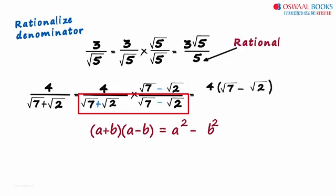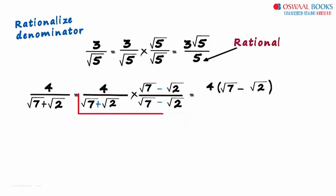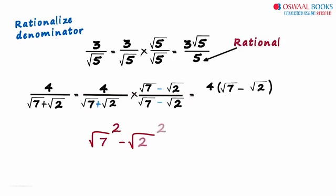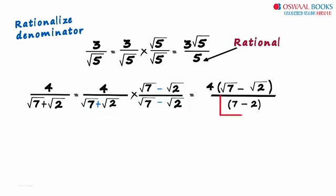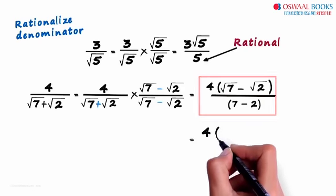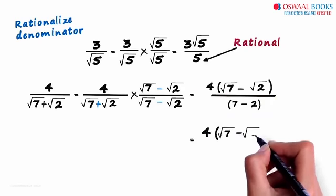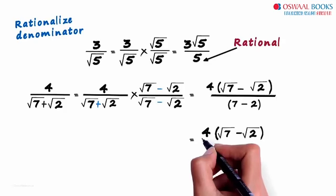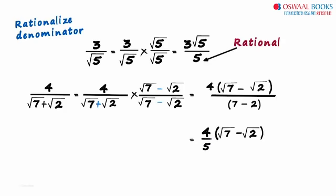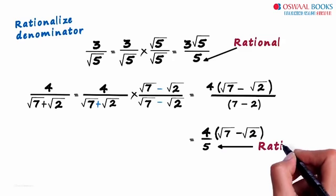Using this identity, we can write the denominator as root 7 squared minus root 2 squared, which equals 7 minus 2. 7 minus 2 is 5, and we get our expression as 4 multiplied by root 7 minus root 2, divided by 5. That's it — we got what we wanted. The denominator is rational now.